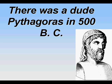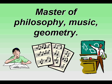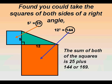There was a dude, Pythagoras, in 500 BC, master of philosophy, music, geometry. Found you to take the squares of both sides of a right angle.